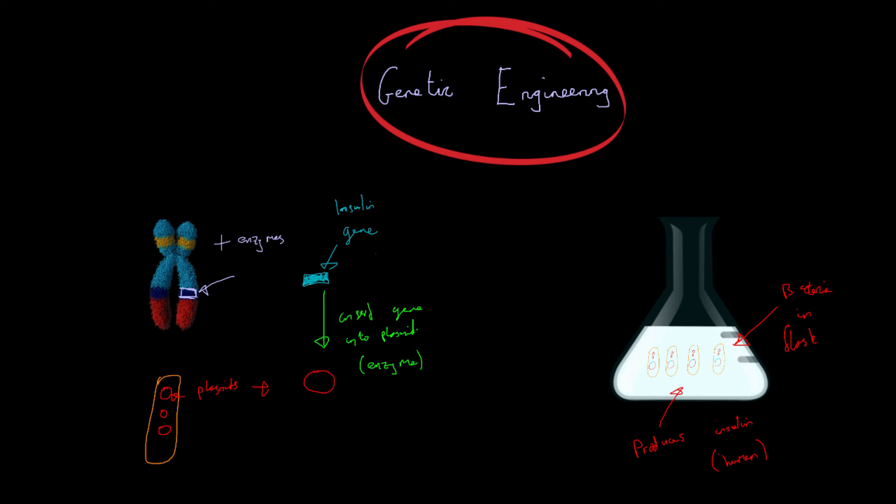So that's the basis of genetic engineering really. We are engineering a cell to produce a protein which it would not normally produce. And the way we do that is we add DNA which is not from that cell or that organism.